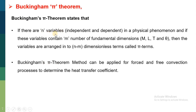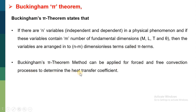Buckingham's Pi theorem states that if there are n number of variables — either independent or dependent — in a physical phenomenon, and if there are m number of fundamental dimensions like m, l, t, and theta, then variables are arranged into n minus m dimensionless terms called pi terms. In Buckingham's Pi theorem, we use pi terms: pi 1, pi 2, pi 3, and so on — the number of pi terms is n minus m. Buckingham's Pi theorem method can be applied for free as well as forced convection to determine the heat transfer coefficient.